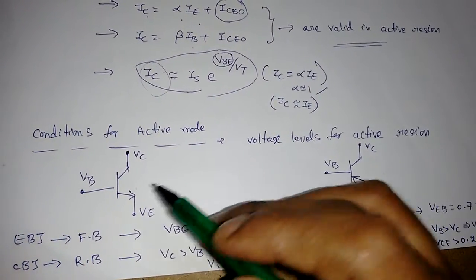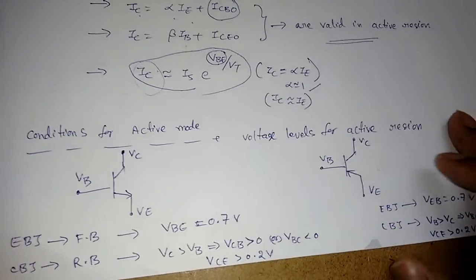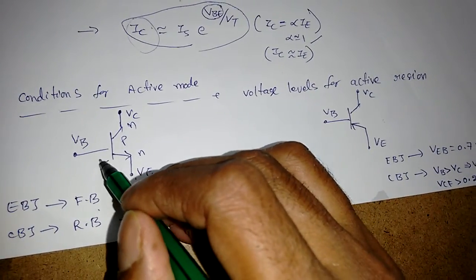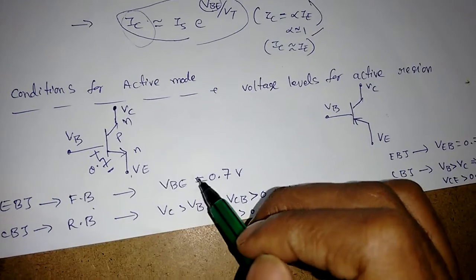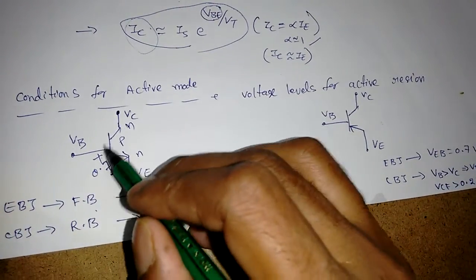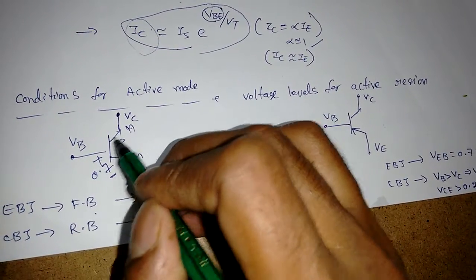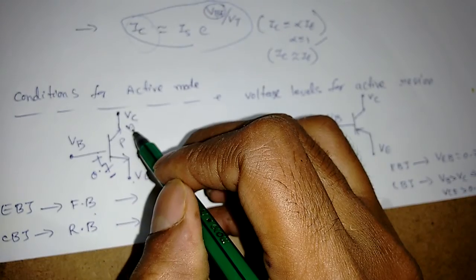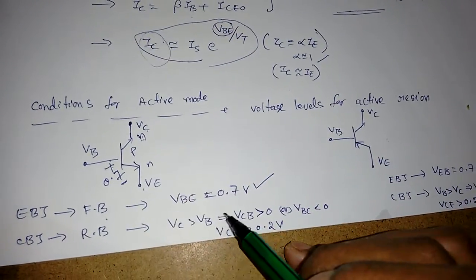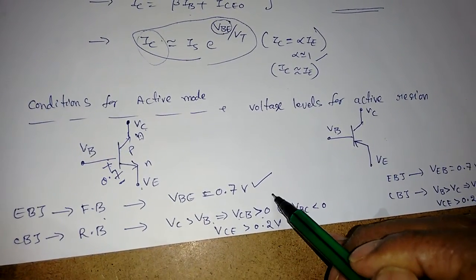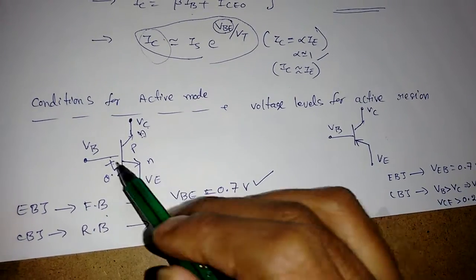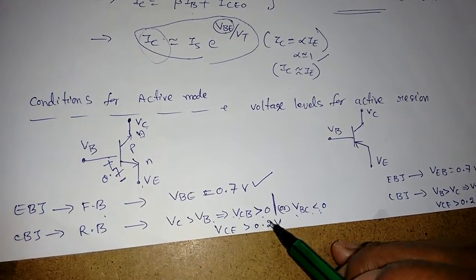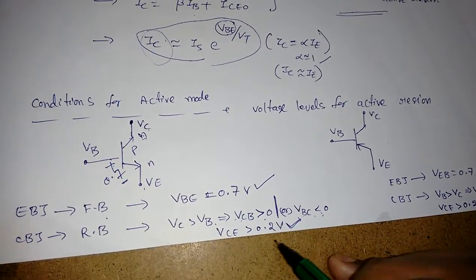For an NPN transistor in a circuit, the emitter-base junction must be forward biased, so VBE should be 0.7 V for silicon. The collector-base junction must be reverse biased: since the collector is N-type, we need VC greater than VB, meaning VCB > 0. Equivalently, VBC < 0 or VCE > 0.2 V confirms active mode.